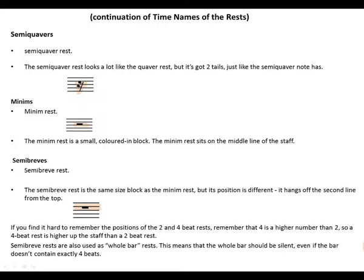If you find it hard to remember the positions of the two and four beat rests, remember that four is a higher number than two, so a four-beat rest is higher up the staff than a two-beat rest. Semibreve rests are also used as whole bar rests. This means that the whole bar should be silent, even if the bar doesn't contain exactly four beats.